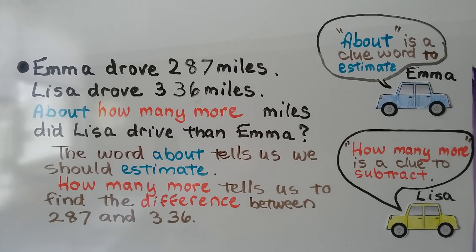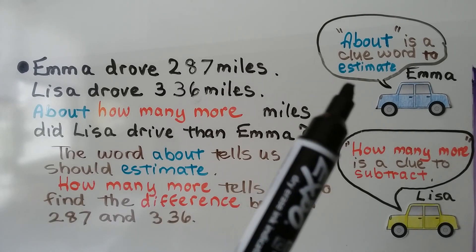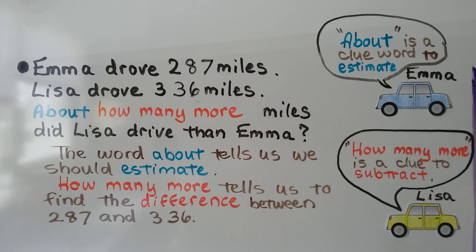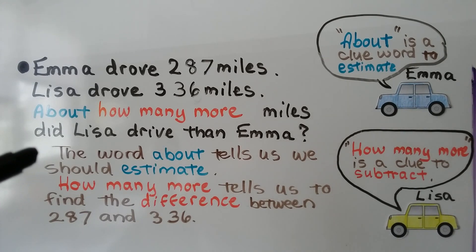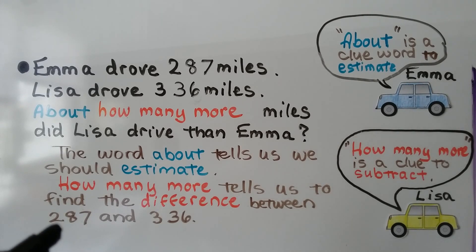Emma drove 287 miles. Lisa drove 336 miles. About how many more miles did Lisa drive than Emma? The word "about" is a clue word to estimate, and "how many more" is a clue word that we need to subtract. So we know we should estimate and find the difference between 287 and 336.